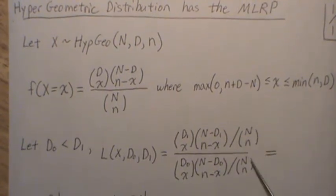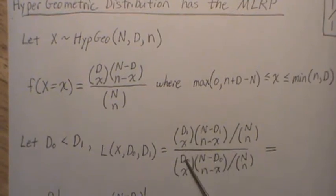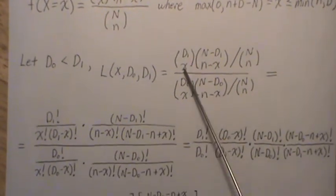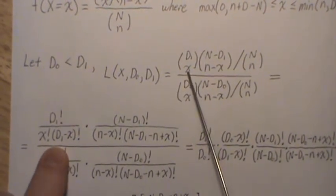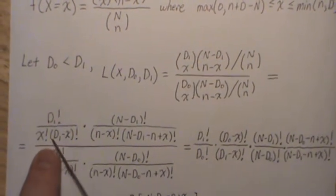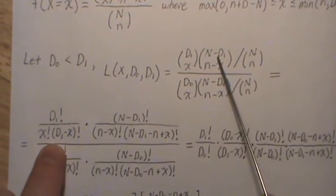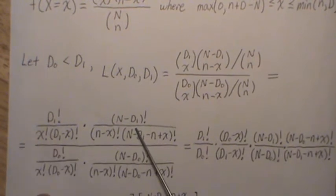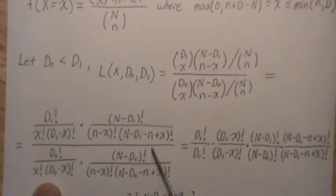And now let's examine this. This quantity and this quantity are identical, so they cancel. And now let's write out what these combinations mean. So this is D1 choose X, which is defined this way. This combination is defined here, this one is here, and this combination is here.